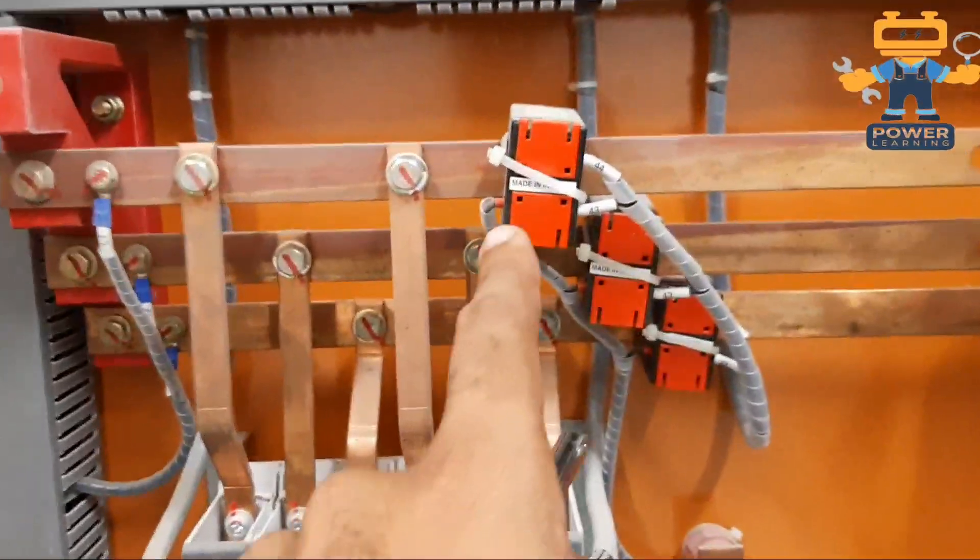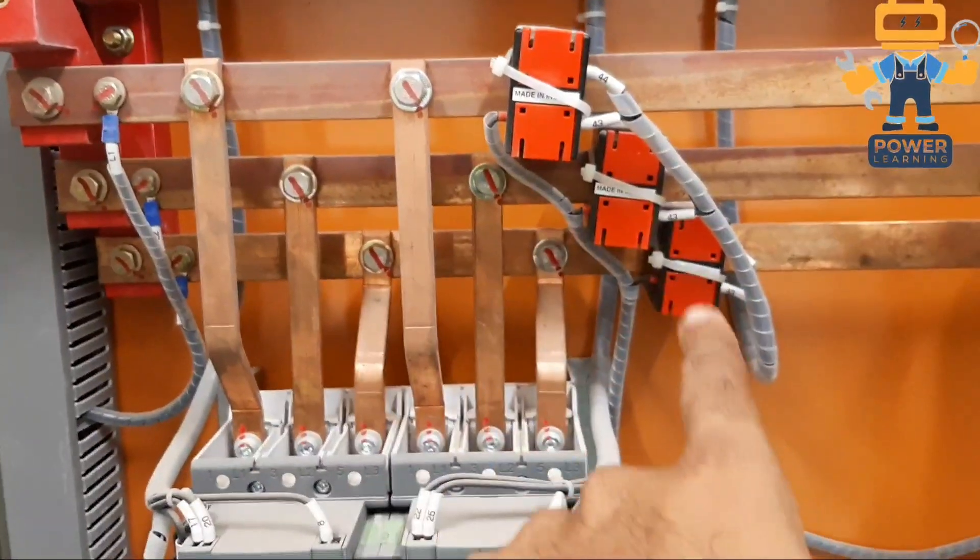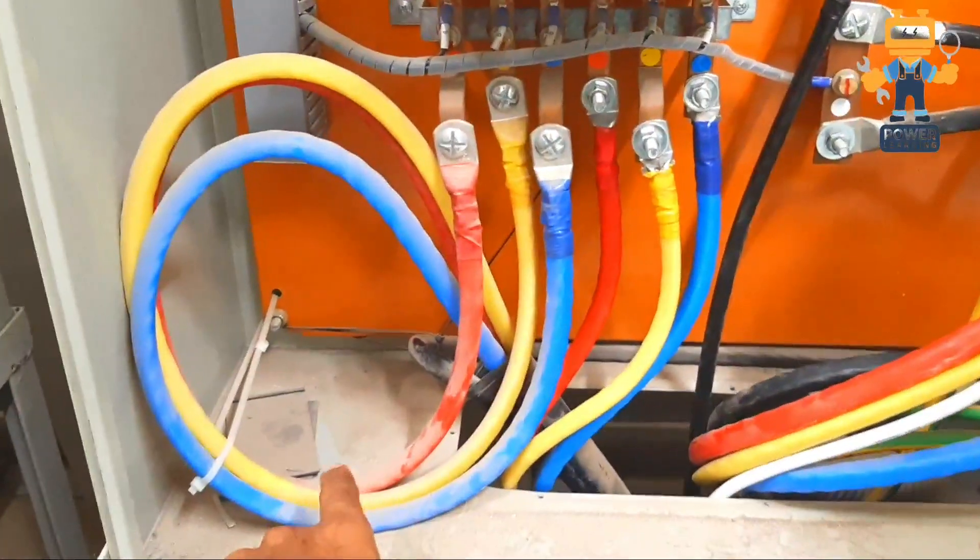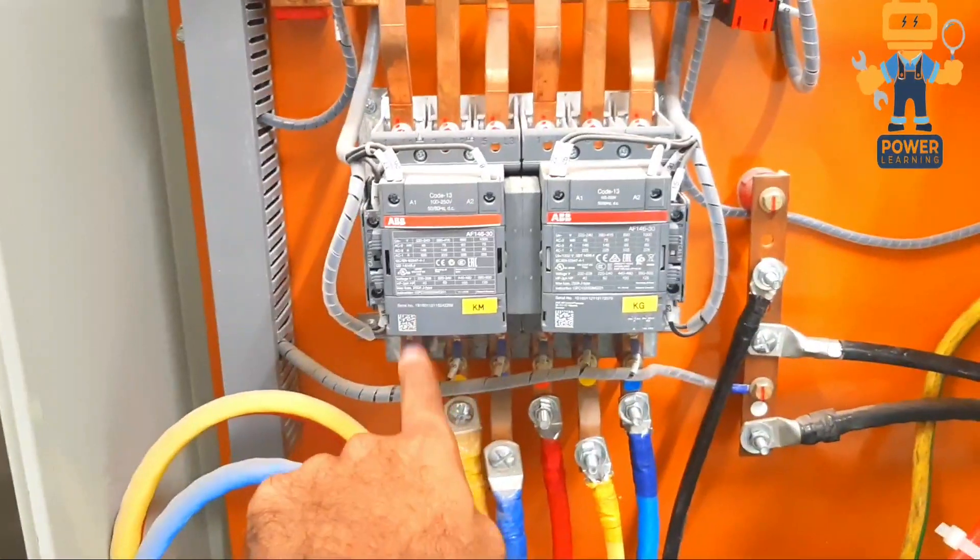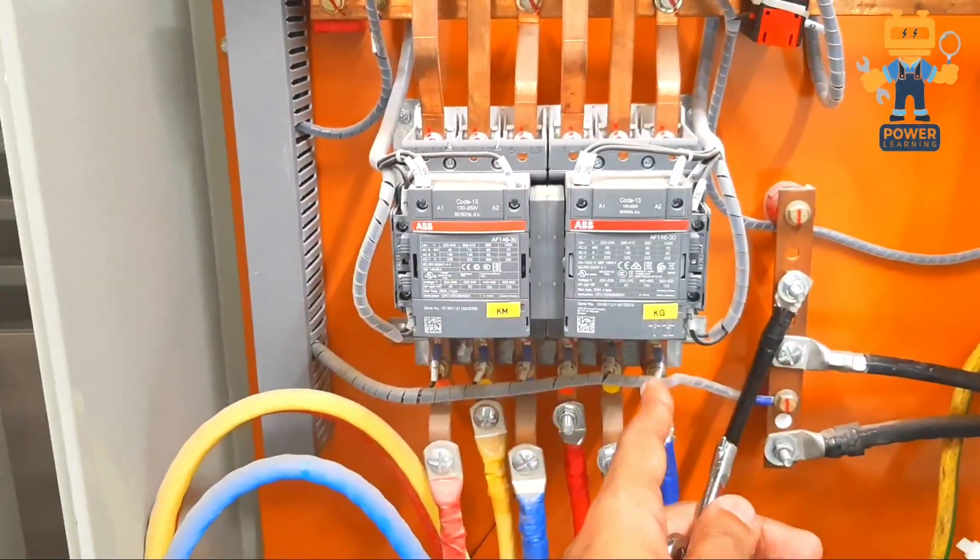These three are our load bus bars and these are the three CTs for measuring current. Here we have our load cable. This contactor is for main supply from transformer and this one is for generator supply.